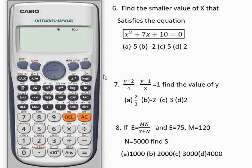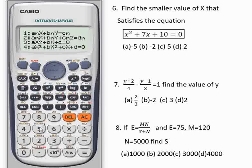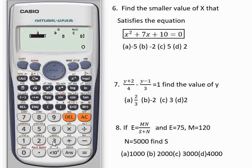Question number 6 says, find the smaller value of x that satisfies the equation x²+7x+10=0. This is a quadratic equation. Even without being told. So you go to your mode, press mode. At option 5, you have equation. You press 5. Then the quadratic equation here is option 3. So you kindly press option 3. It will take you to where you input the values of A, B, C.